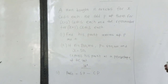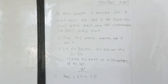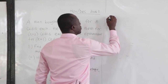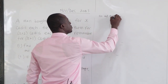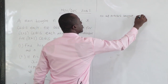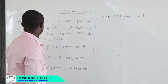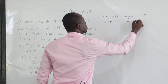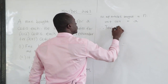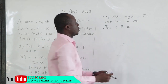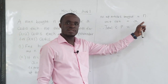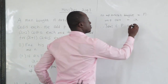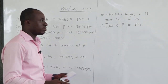From the question, we are told that a man bought N articles for X CDs each. So the number of articles bought is N, and the unit cost is X. Therefore, the total cost price will be N times X, which is NX. That is our total cost price.